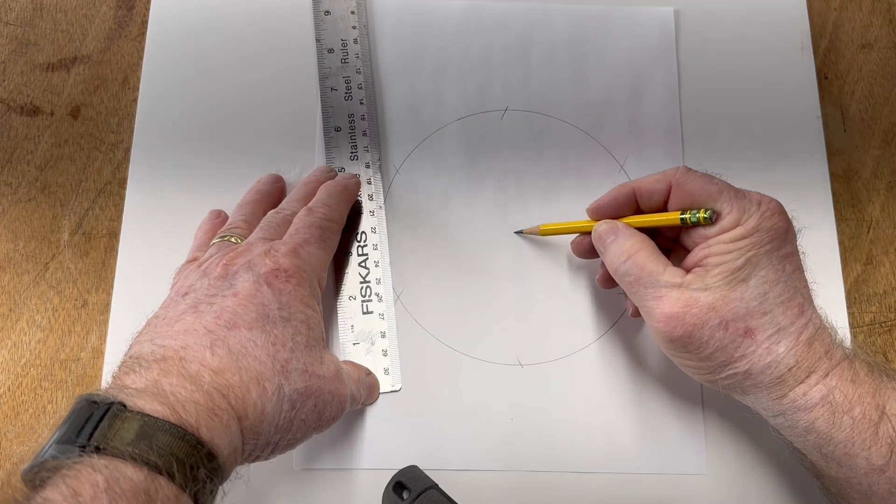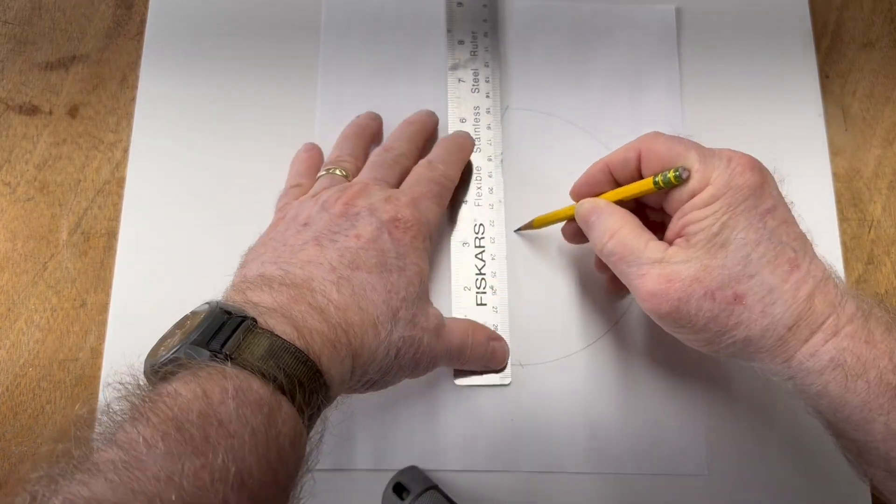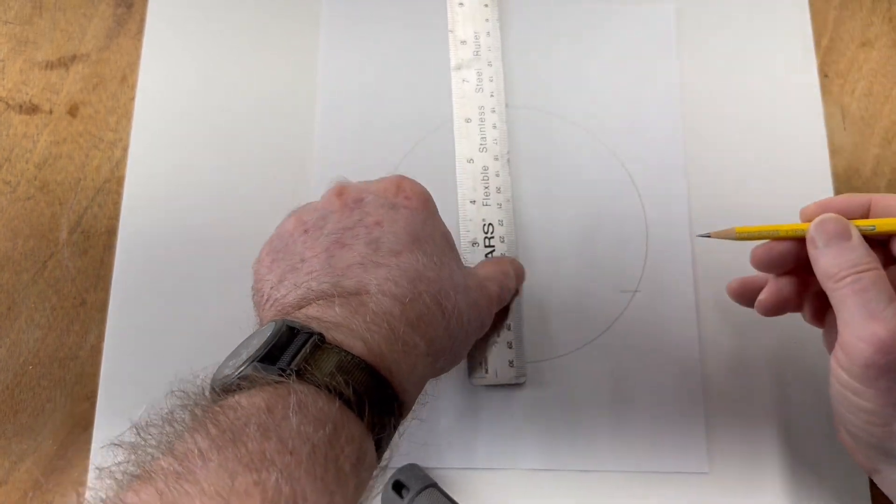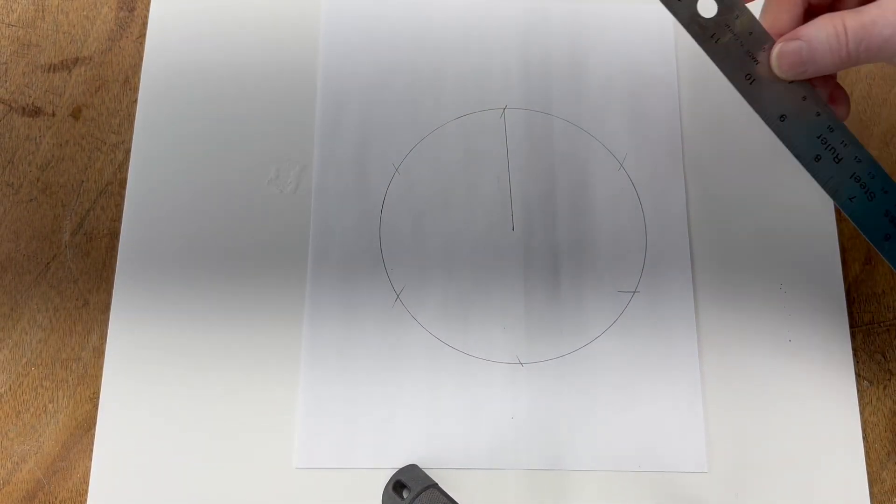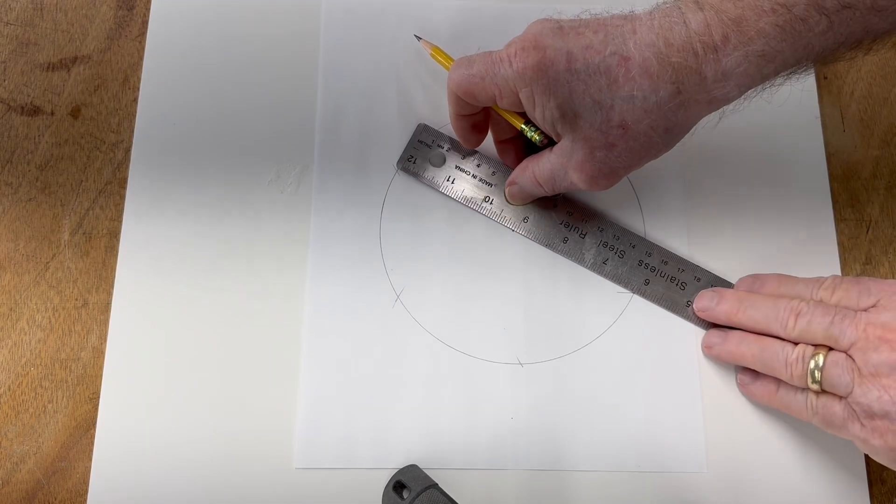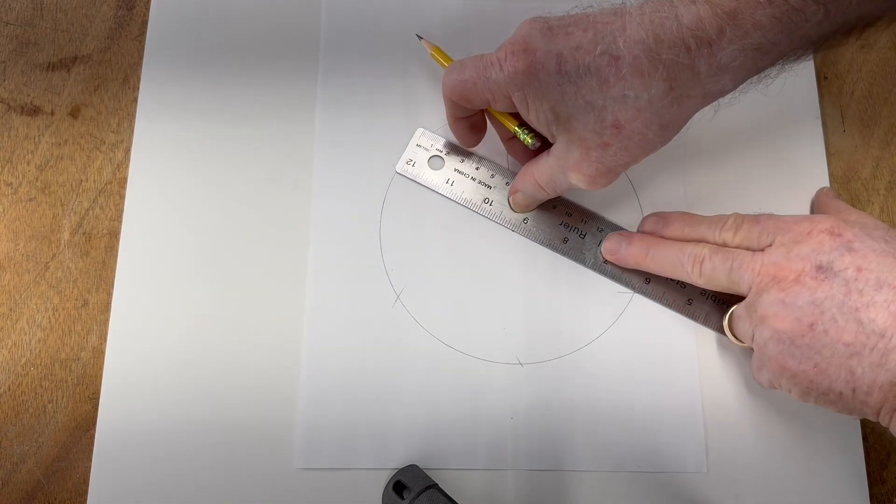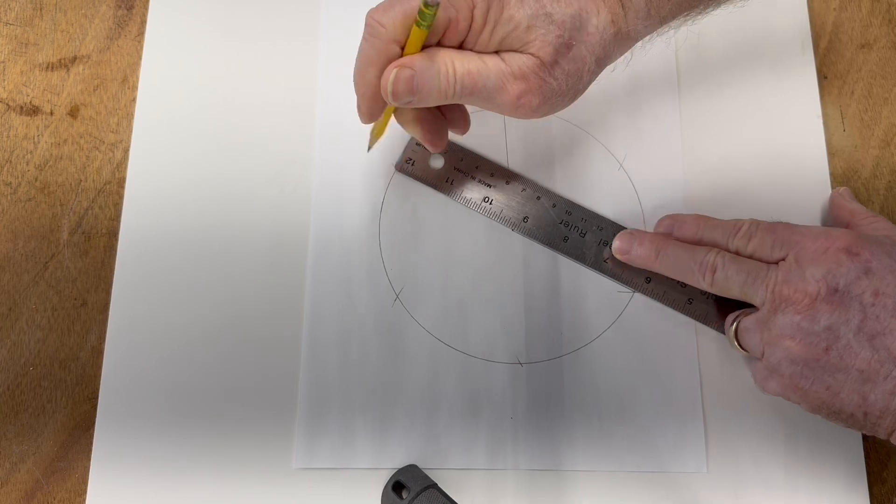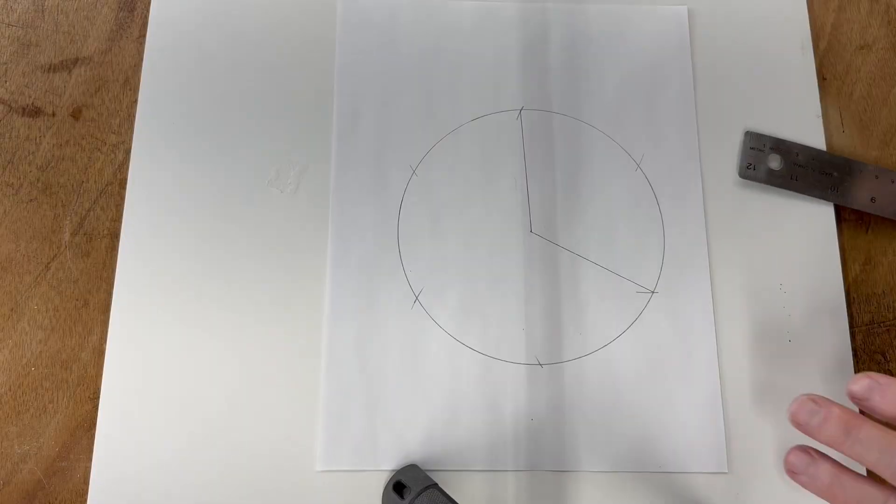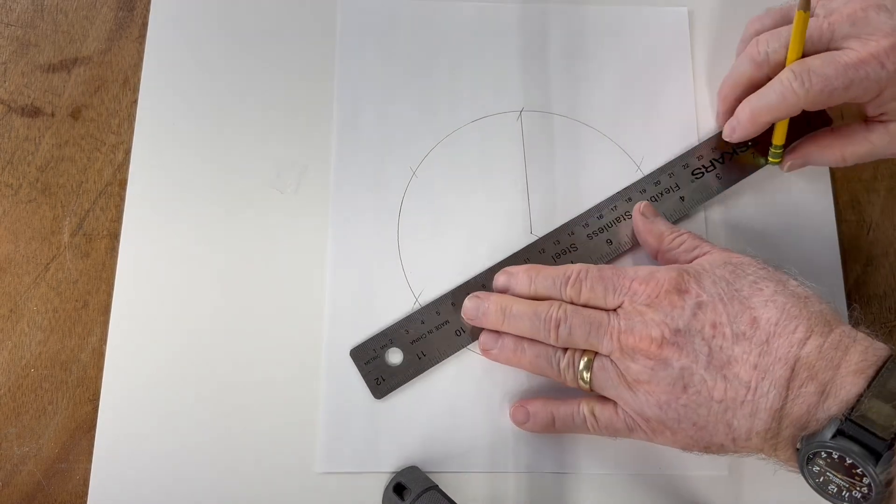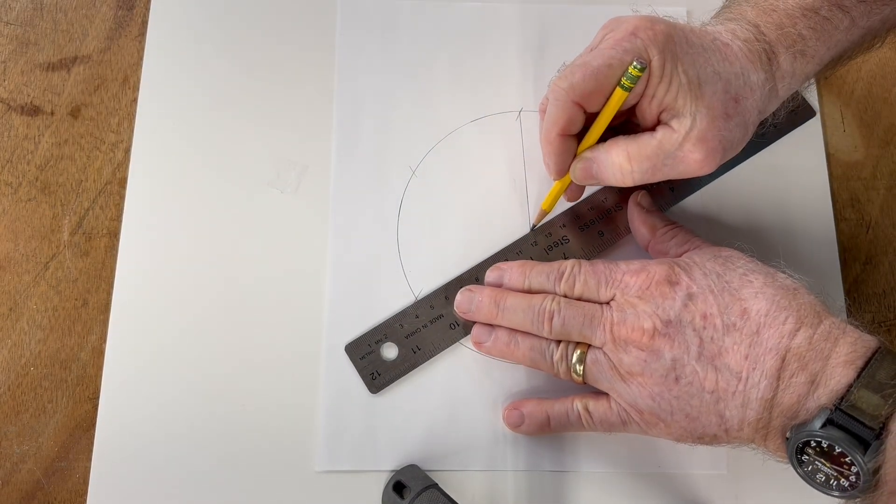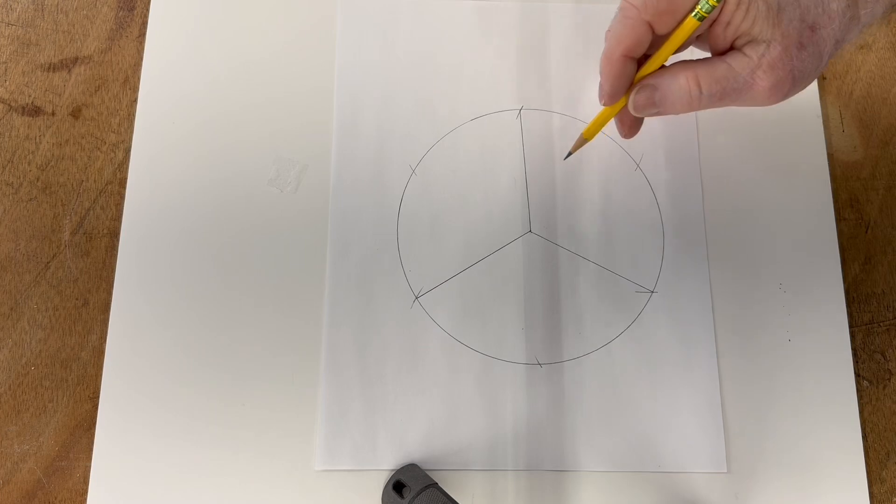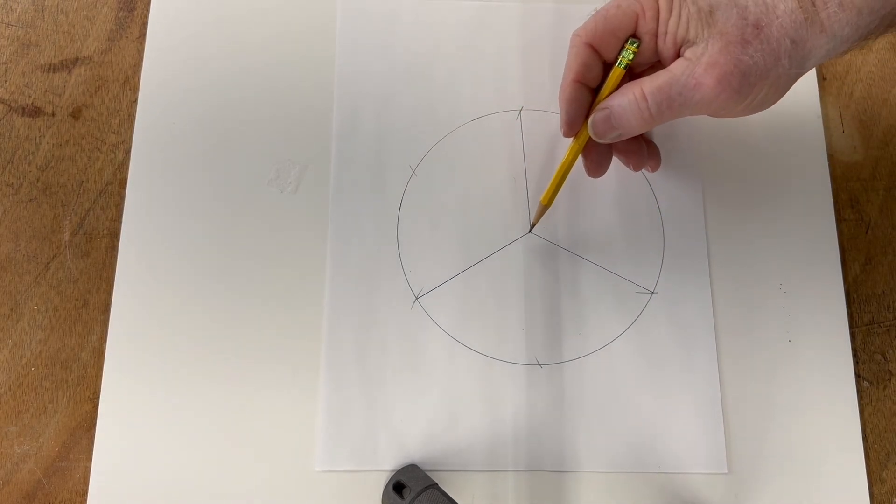I'm going to find the center right there where the compass made the arc, and draw one line right up to that point. I'll do the same thing over here, and then the last line right here. That gives me three equal parts. They're 120 degrees separated.